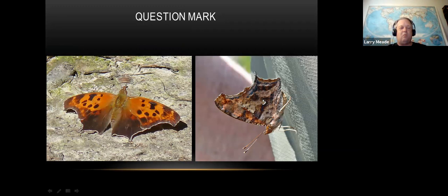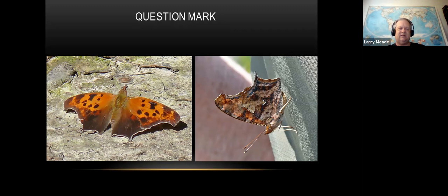An interesting thing about these angle wings is that they winter as adults. They'll actually bury themselves in the leaf litter, and on a warm January day you might see them come out and fly around, feeding on sap. When it cools down they go back into torpor, then come out again in spring. The mourning cloak does this too. Some butterflies winter as caterpillars, some as eggs - these happen to winter as adults.